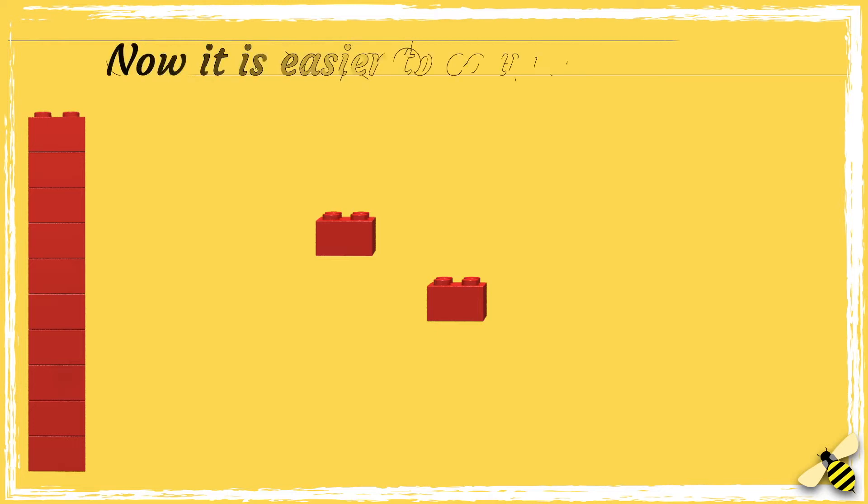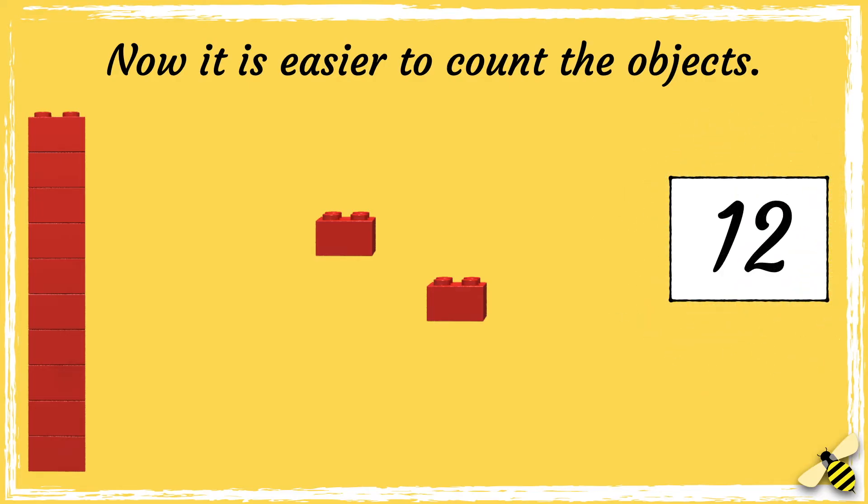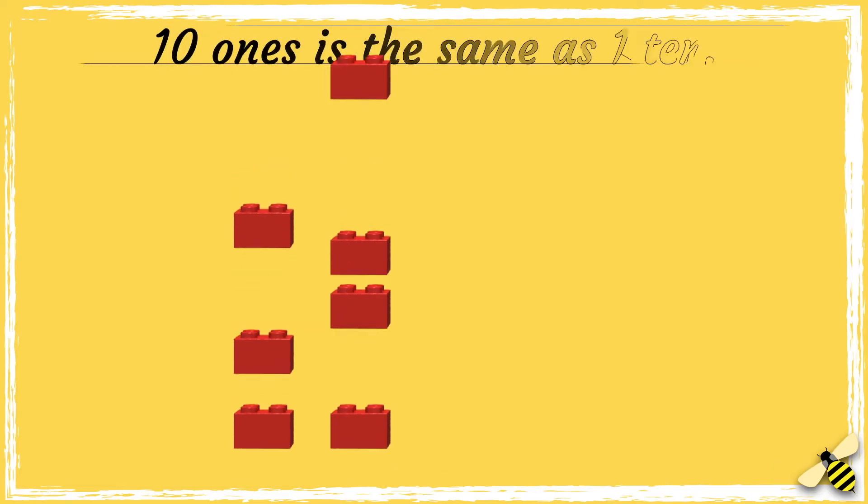Now it's much easier to count the objects, as I can clearly see a 10 and two ones. Ten, eleven, twelve. Ten ones is the same as one ten.